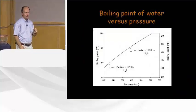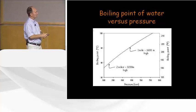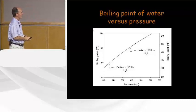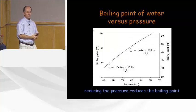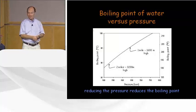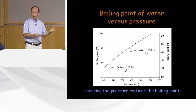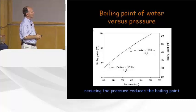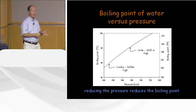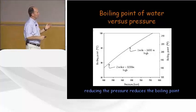The boiling point of water changes with pressure, because the boiling point is defined as where the vapor pressure of the liquid equals atmospheric pressure. At 760 torr, the boiling point is 212°F or 100°C. If we go a mile high in Denver, the pressure is lower, so it takes a lower temperature to reach atmospheric pressure — the boiling point drops to something like 204°F or 95–96°C. Reducing the pressure reduces the boiling point.